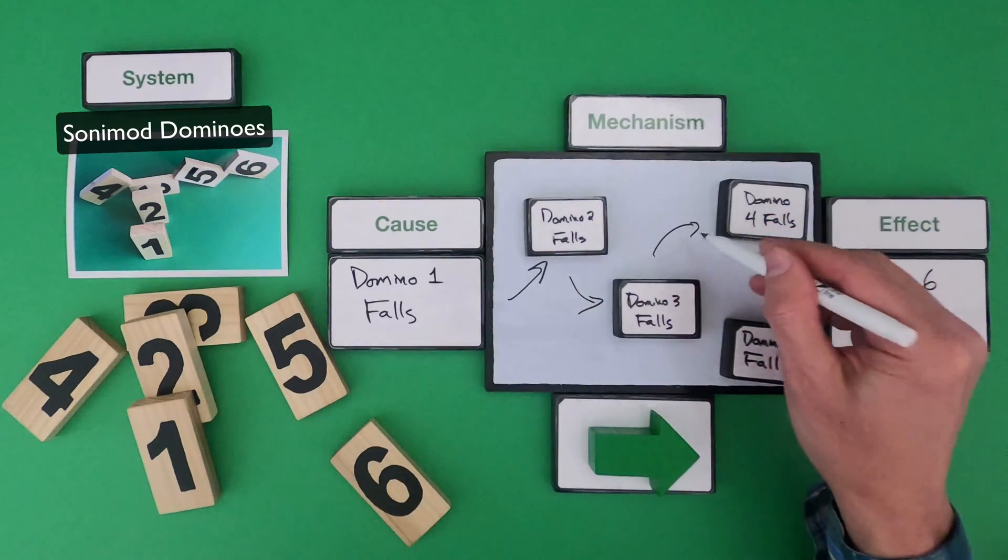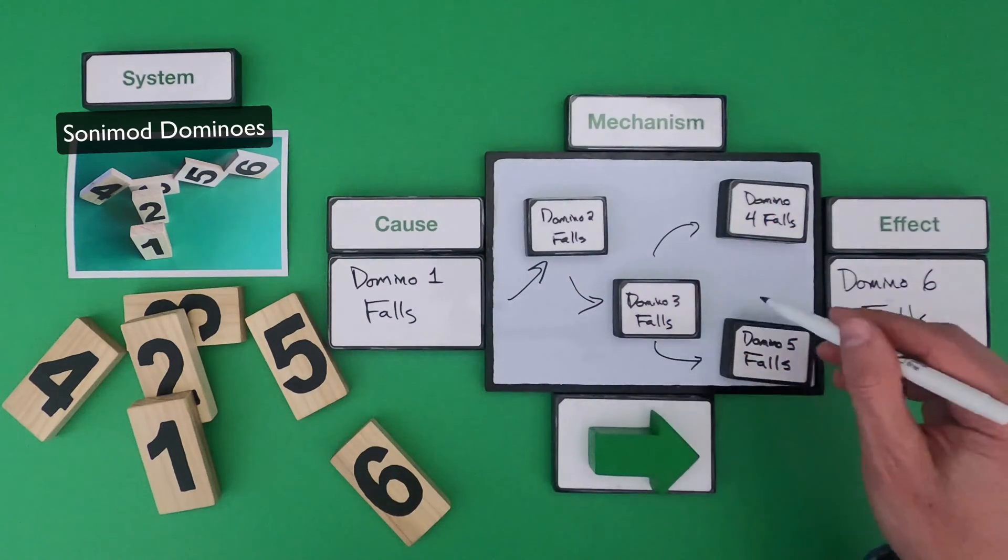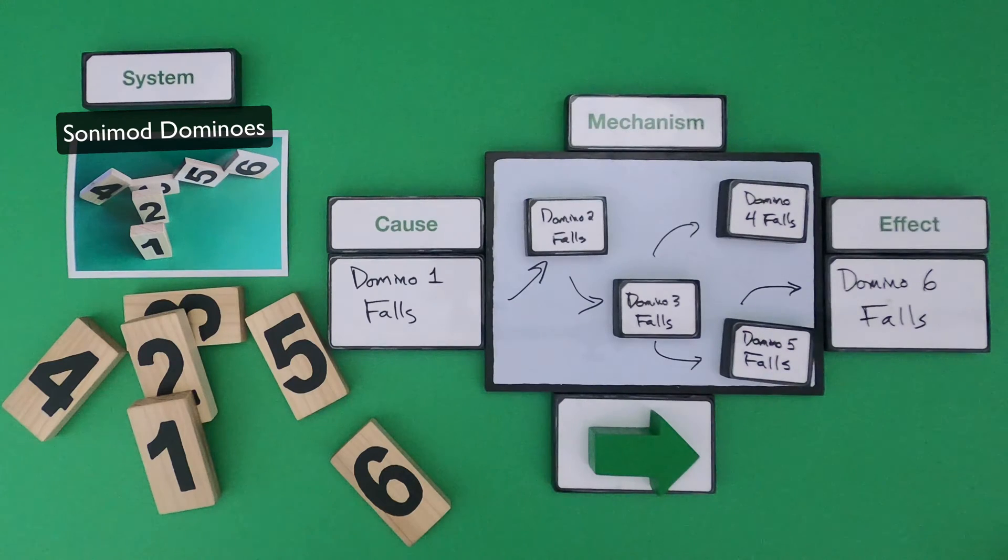And then domino three hits two other dominoes. So first we have the domino four falling, then the domino five falling, and then finally we've got domino six falling. So that's a cause, mechanism, and effect for these simple dominoes falling over.